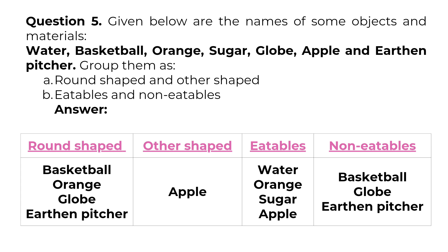Question 5: Given below are the names of some objects and materials — Water, Basketball, Orange, Sugar, Globe, Apple, and Earthen pitcher. Group them as round-shaped and other-shaped; eatables and non-eatables. Answer — Round shaped: Basketball, Orange, Globe. Other shaped: Earthen pitcher. Eatables: Apple, Water, Orange, Sugar. Non-eatables: Basketball, Globe, Earthen pitcher.